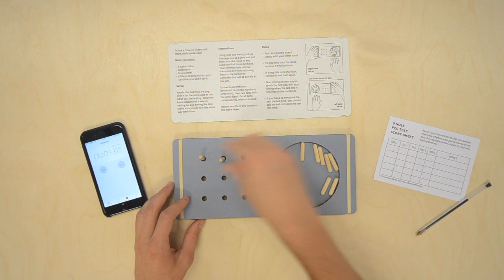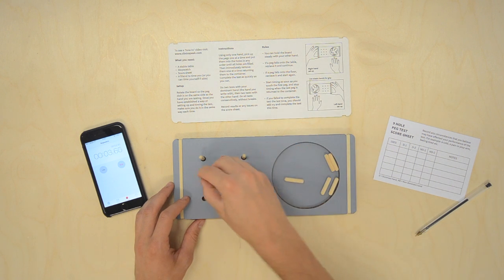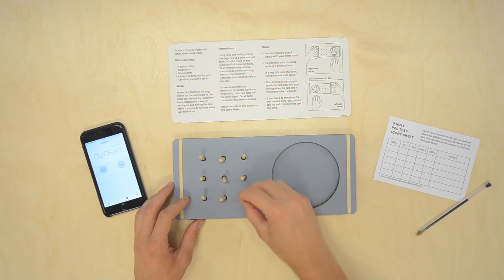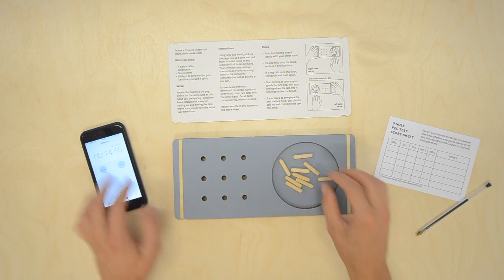Using only one hand, pick up the pegs one at a time and put them into the holes in any order until all the holes are filled. Then immediately remove them one at a time, returning them to the container. Complete the test as quickly as you can.